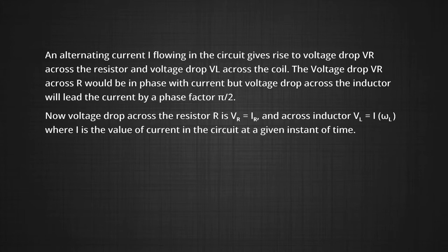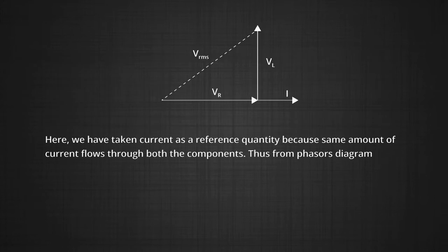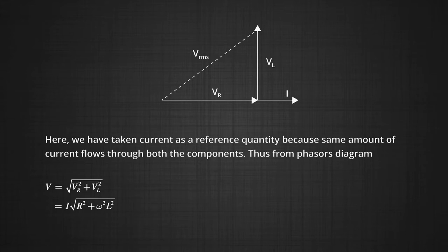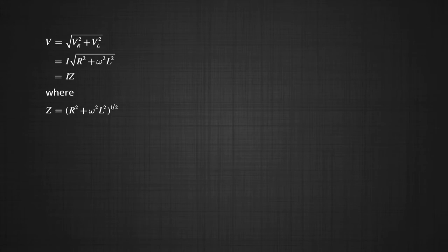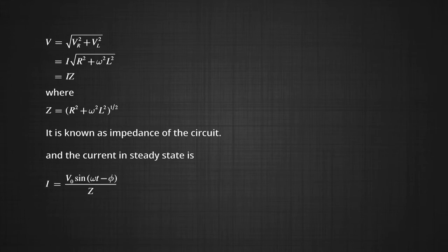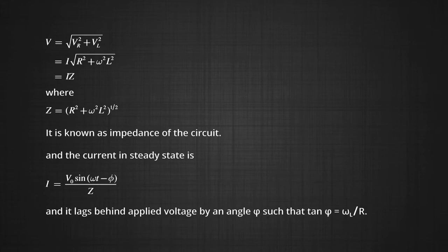The voltage phasor diagram for the LR circuit is as shown. In the figure, we have taken current as the reference quantity because the same amount of current flows throughout both components. From the phasor diagram, V = √(V_R² + V_L²) = I√(R² + ω²L²) = IZ, where Z = √(R² + ω²L²) is the impedance of the circuit. The current in steady state is I = V₀ sin(ωt − φ)/Z, and it lags behind the applied voltage by angle φ such that tan φ = ωL/R.